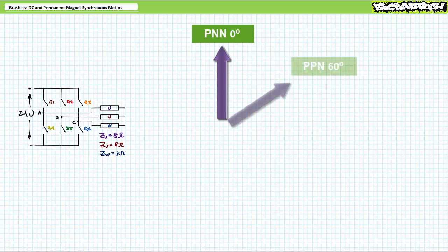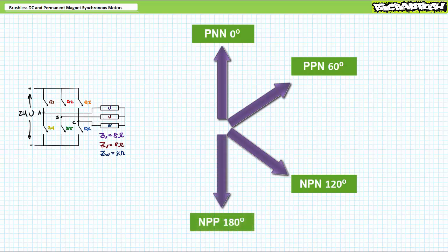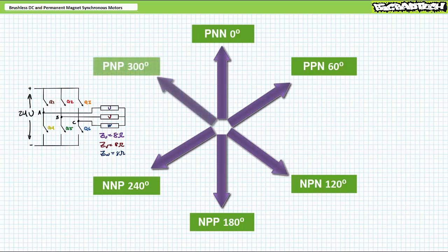PNN points at zero degrees, PPN points at 60 degrees, NPN points at 120 degrees, NPP points at 180 degrees, NNP points at 240 degrees, and finally PNP points at 300 degrees. Pretty cool, huh?